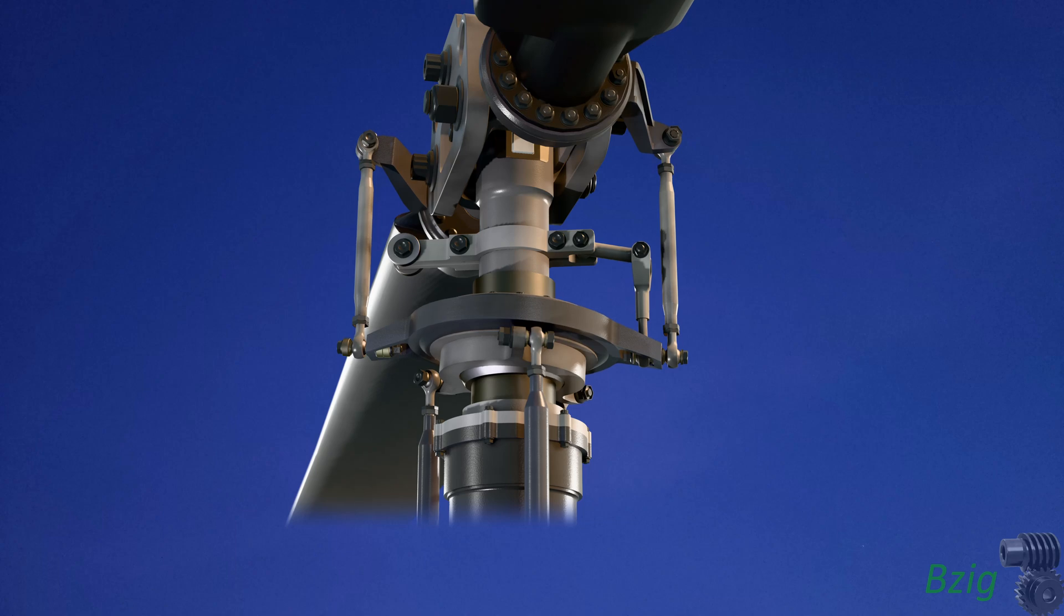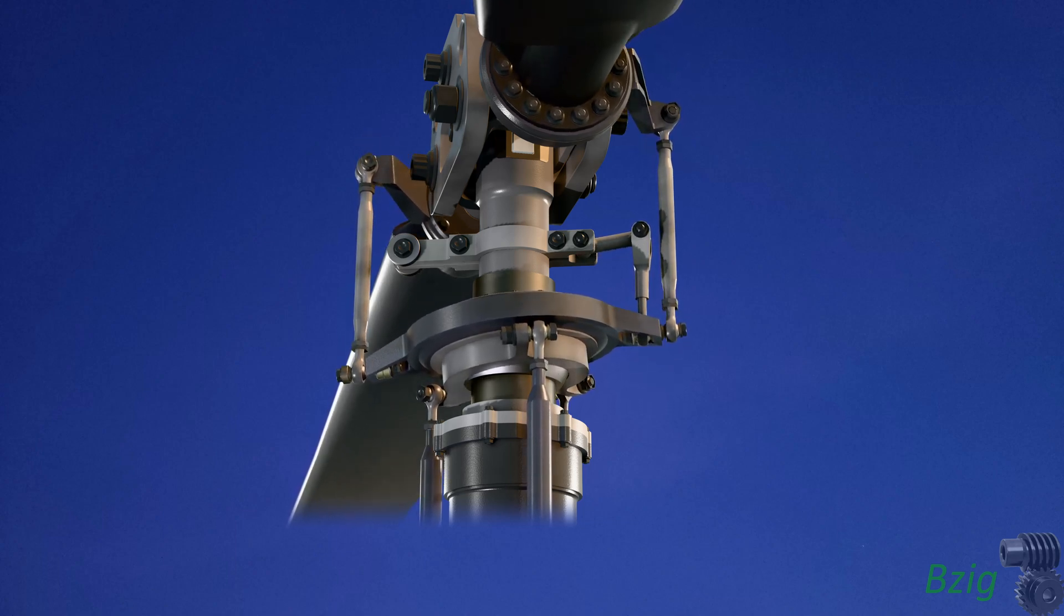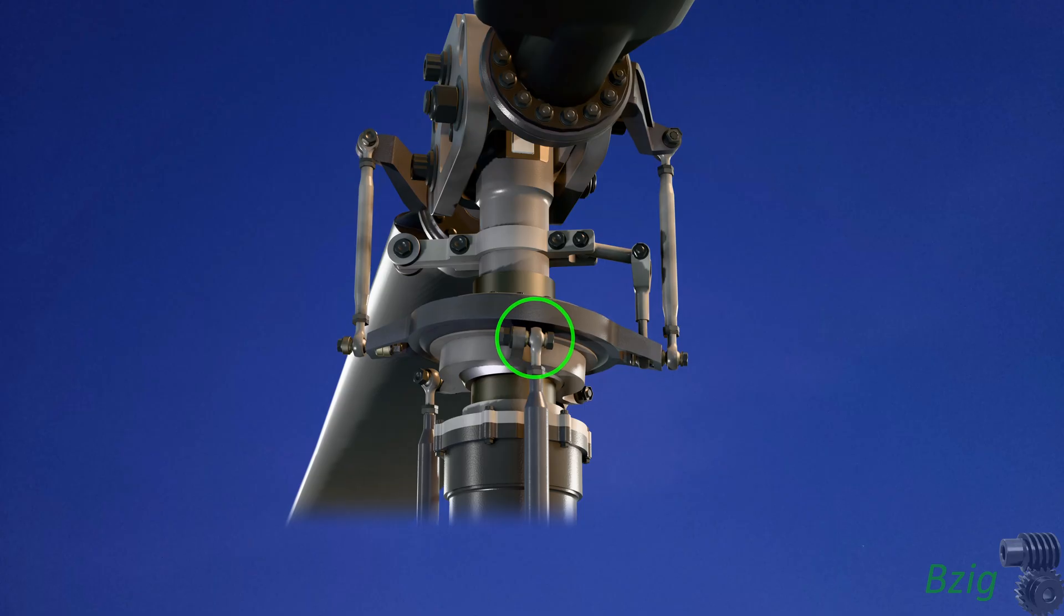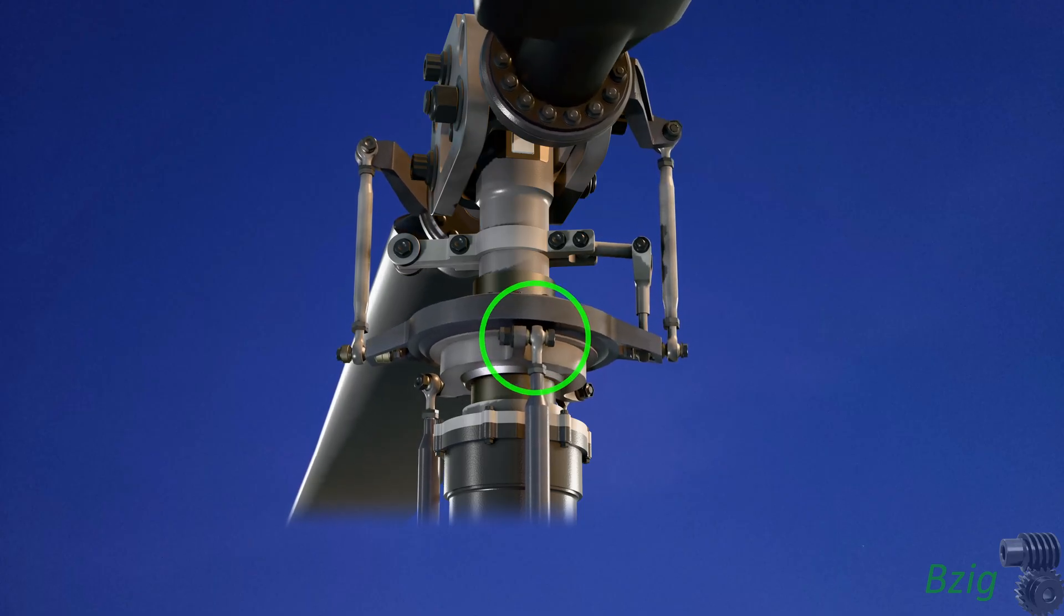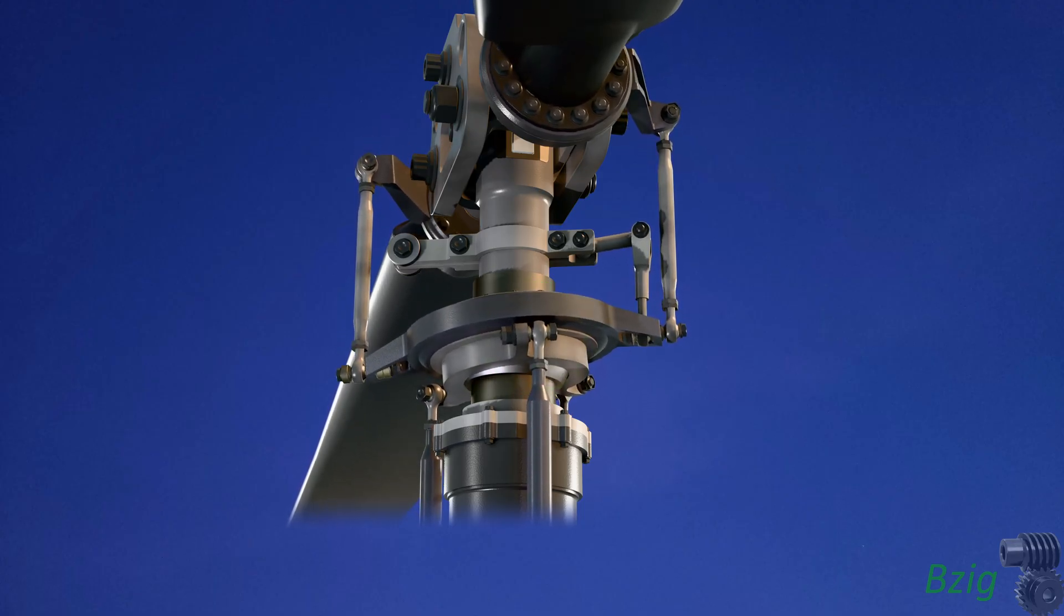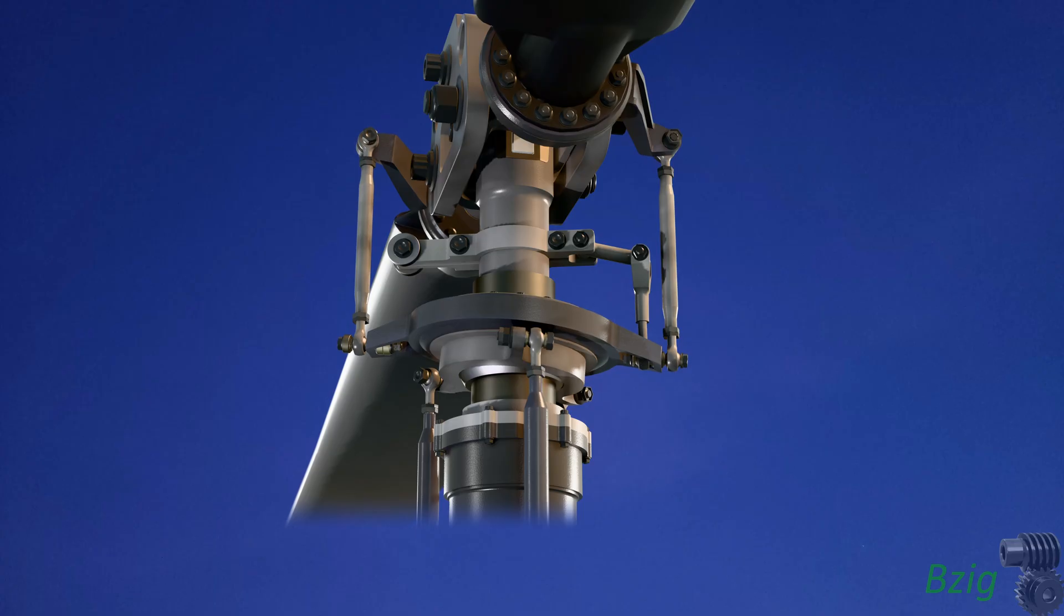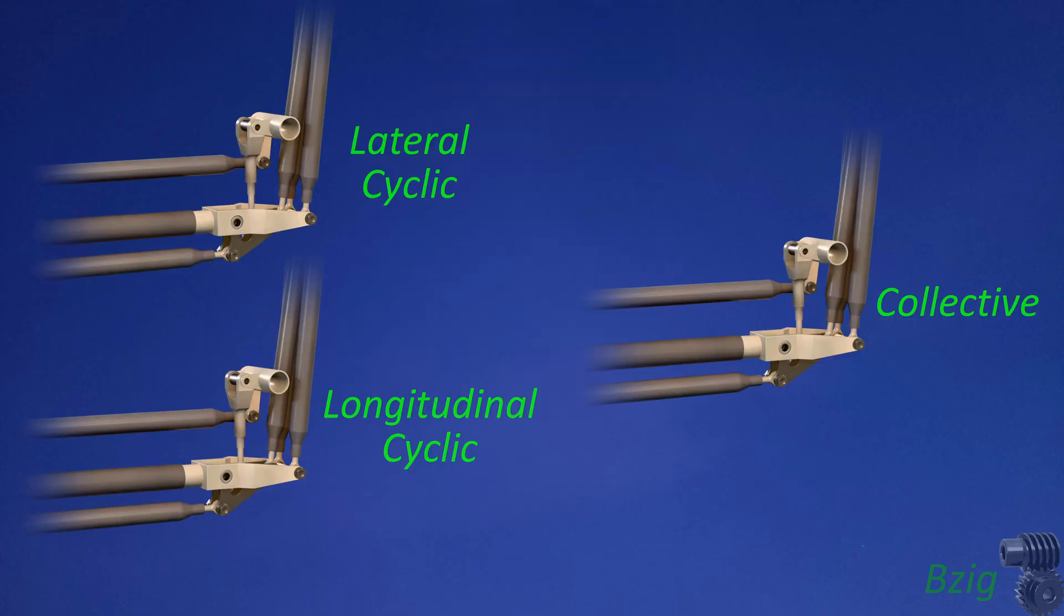I intend to redesign the swashplate to remove some of the coupling that I mentioned earlier. In particular, I don't want this aft push-pull tube to have any vertical motion with a pure lateral cyclic input. I'm not sure if that's how the actual R44 is designed, but that change will make for a cleaner set of inputs at the lower flight controls, with less coupling.